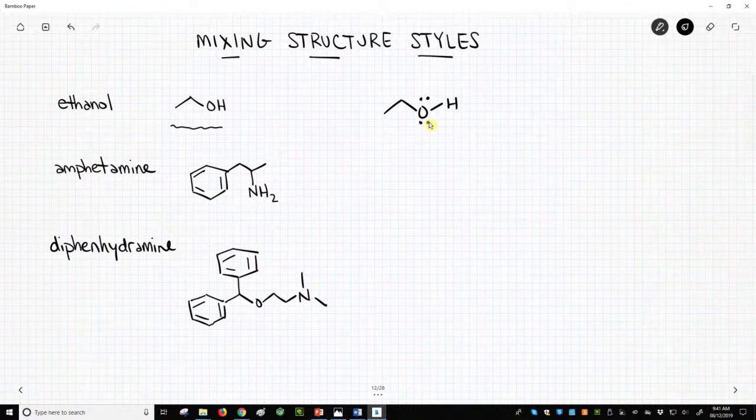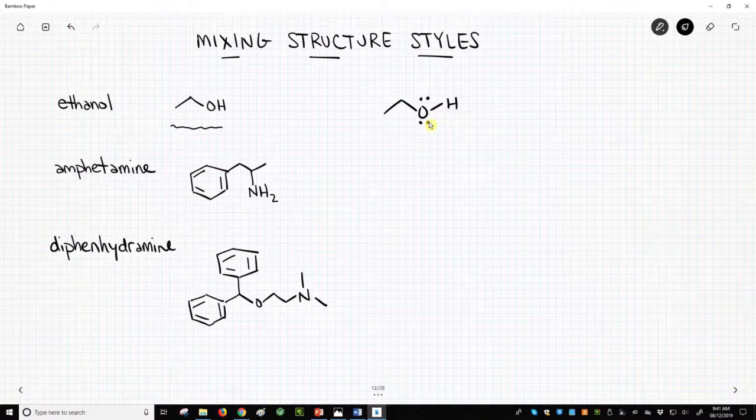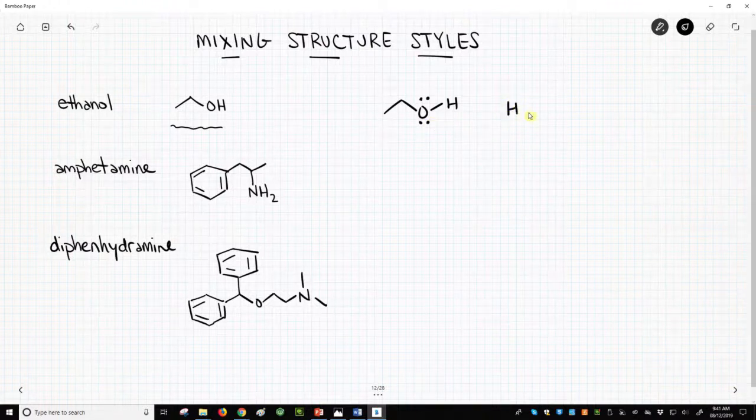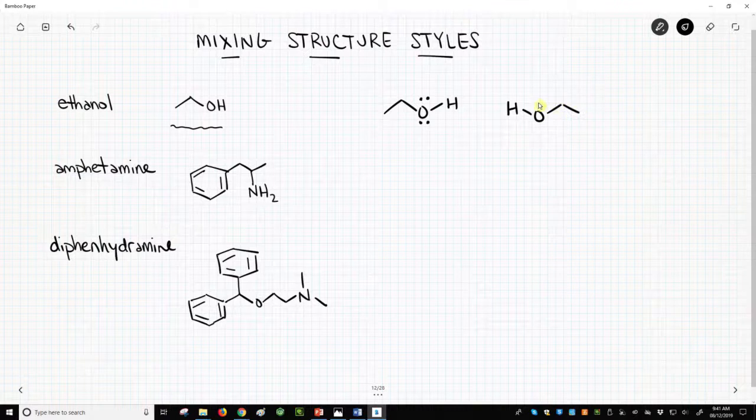This picture blends features of line-angle structures and Lewis-dot structures. As a side comment, we can draw ethanol backwards, upside down.